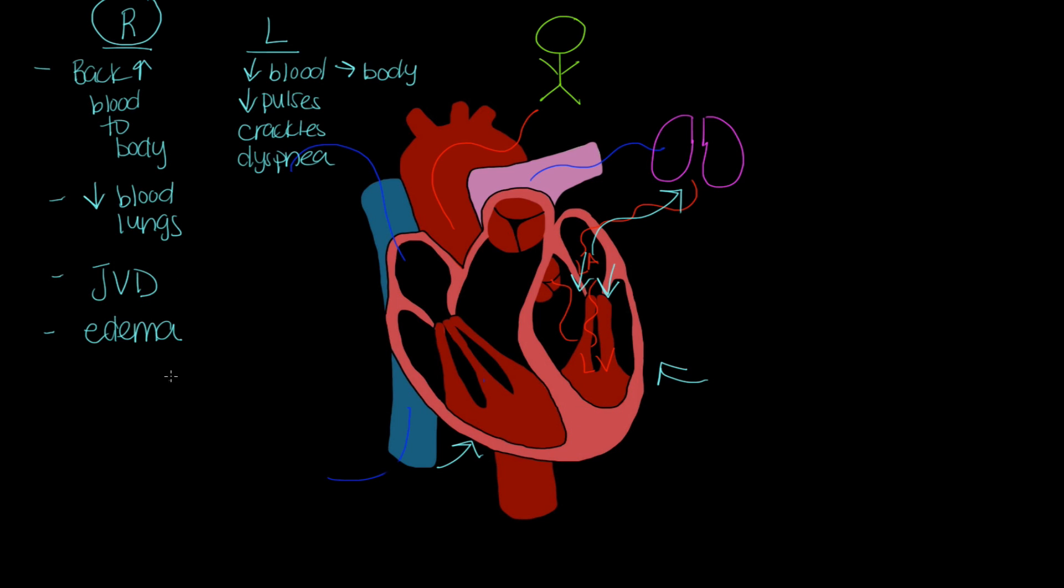So what would be our treatment? We want to give the patient something to make the heart squeeze stronger. Because the problem is it's not squeezing strong enough. We call those drugs positive inotropes. And the big one we always talk about is digoxin. That's a positive inotrope. Now digoxin works by making the heart squeeze stronger. But in order to squeeze stronger, the heart has to slow down. And that's why we always make a big deal about digoxin.